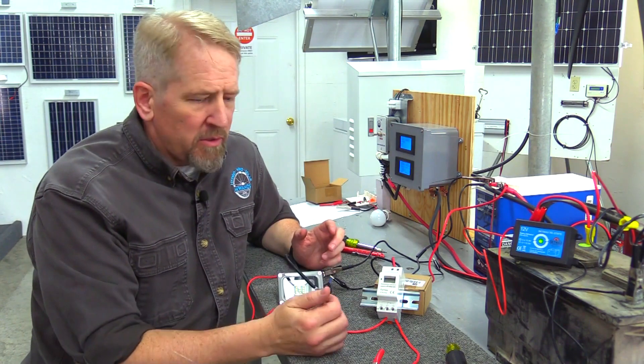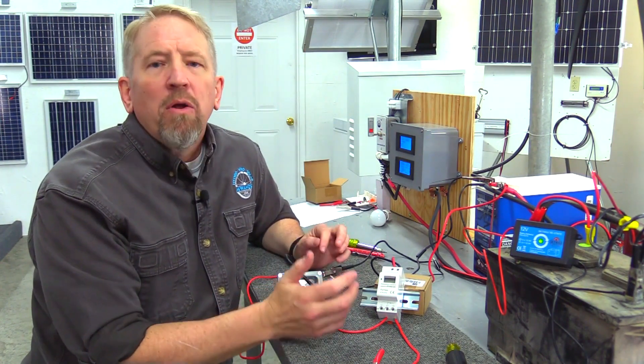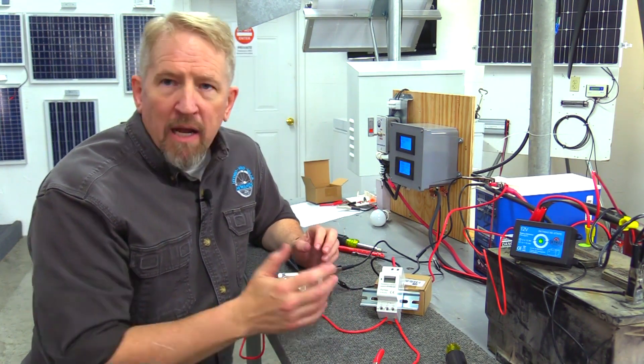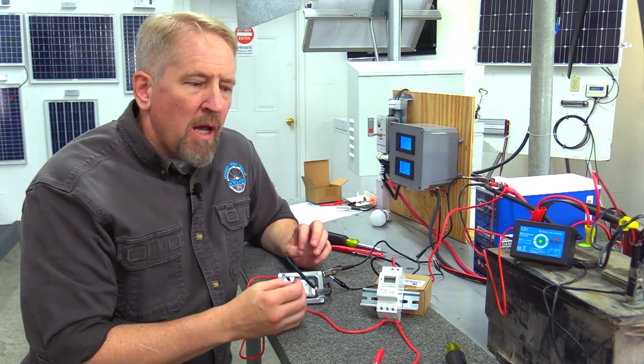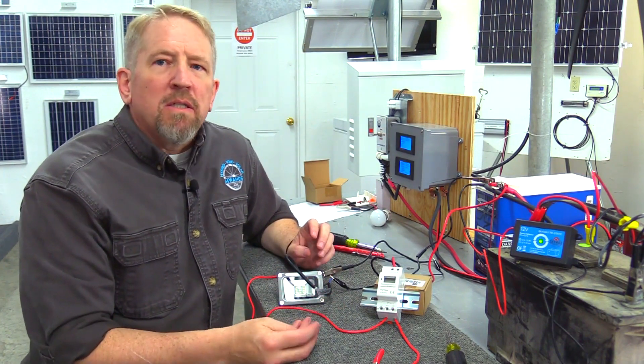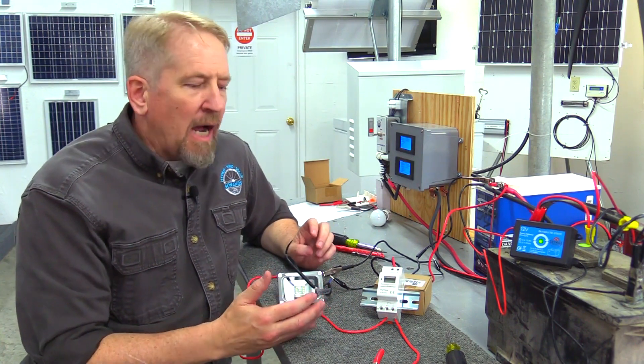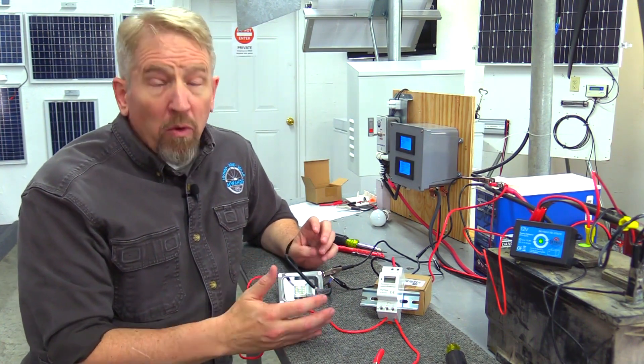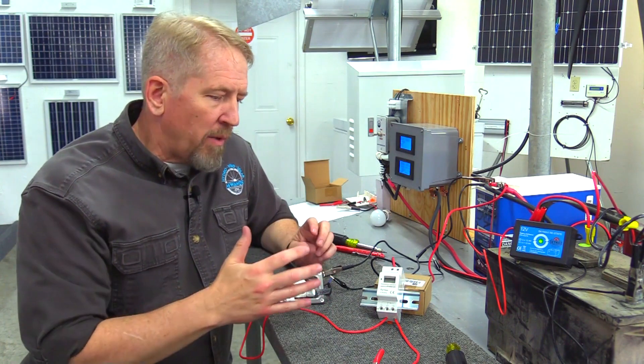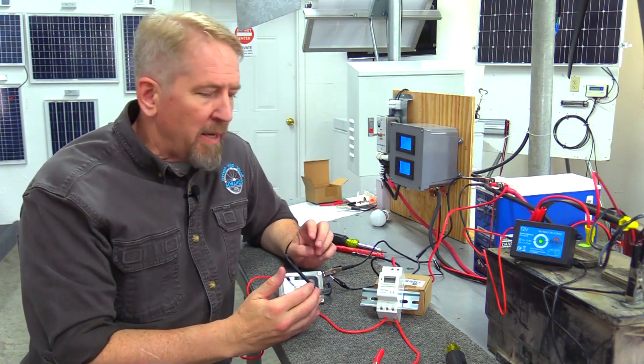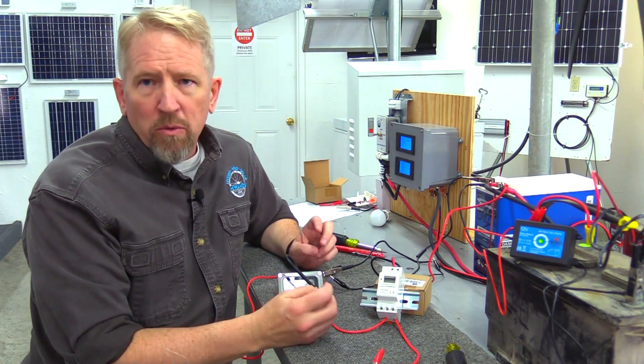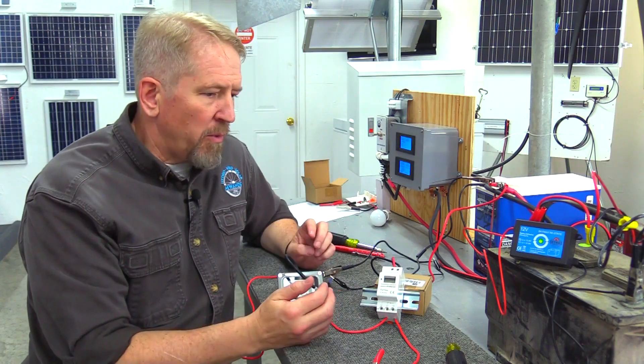You can get 12 volt timers on Amazon, eBay, all over creation. But we went out and actually had this made for us because we've got a lot of instances where you need that higher voltage. Like if you're doing a water heating element in a stock tank or anything like that, those 12 volt timers just can't do it. So we actually went to our supplier and had this made. This is a really cool device that you can only get here at Missouri Wind and Solar.